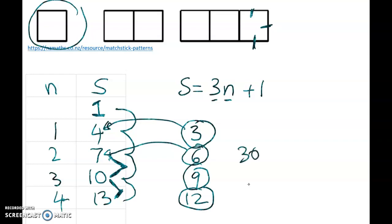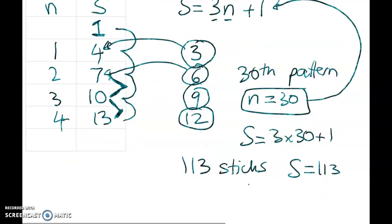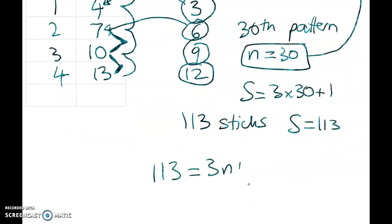If I said to you, find me the thirtieth pattern, how many sticks? I would take n equals 30, and I would substitute it into this rule. And I would get s is equal to 3 times 30 plus 1. If I said to you, how many patterns does it take to be using up 113 sticks? Then s is equal to 113. I'm going to go like this. 113 is equal to 3n plus 1. I don't know if that one's going to work. It's not going to work, because I've done my maths wrong. Let me have another thing. Let's make it, does that work or not?